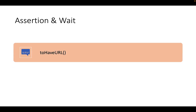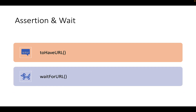Once you get the URL, you may want to assert it — a different method exists for that which is toHaveURL(). Also, sometimes a client-side router does not immediately change the URL after clicking a button, link, or any other element that triggers navigation. In that case, you can use the waitForURL() method.